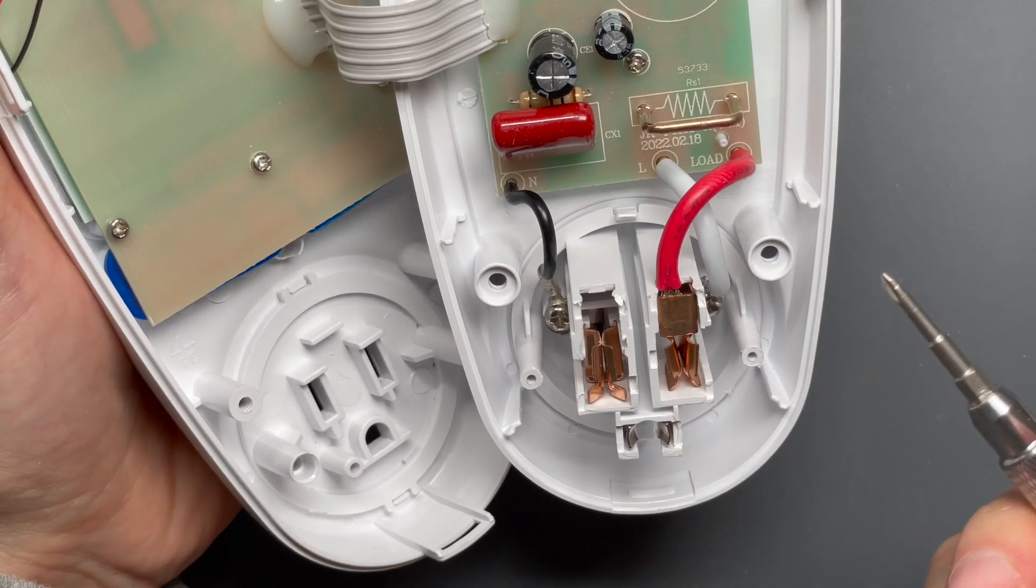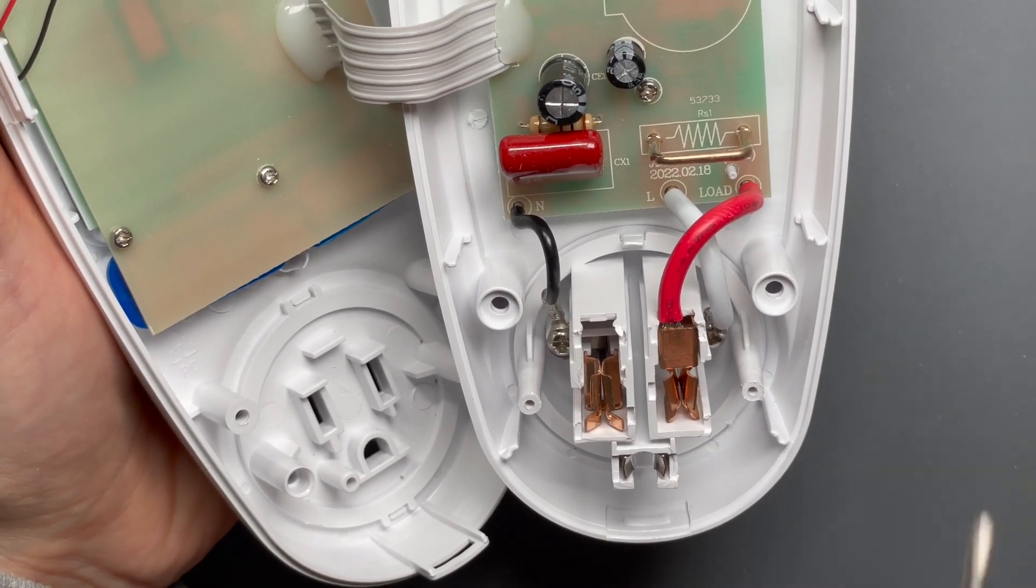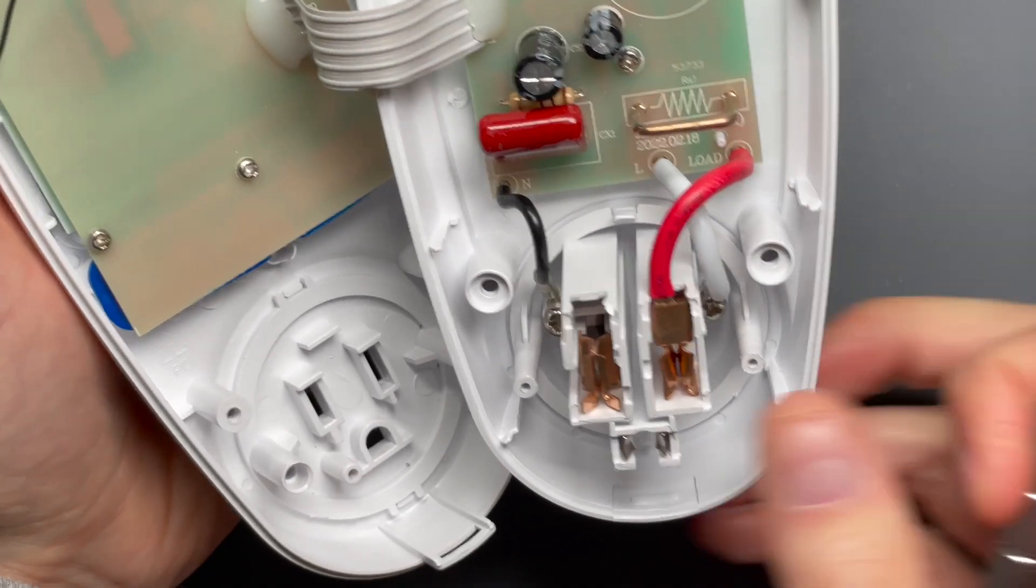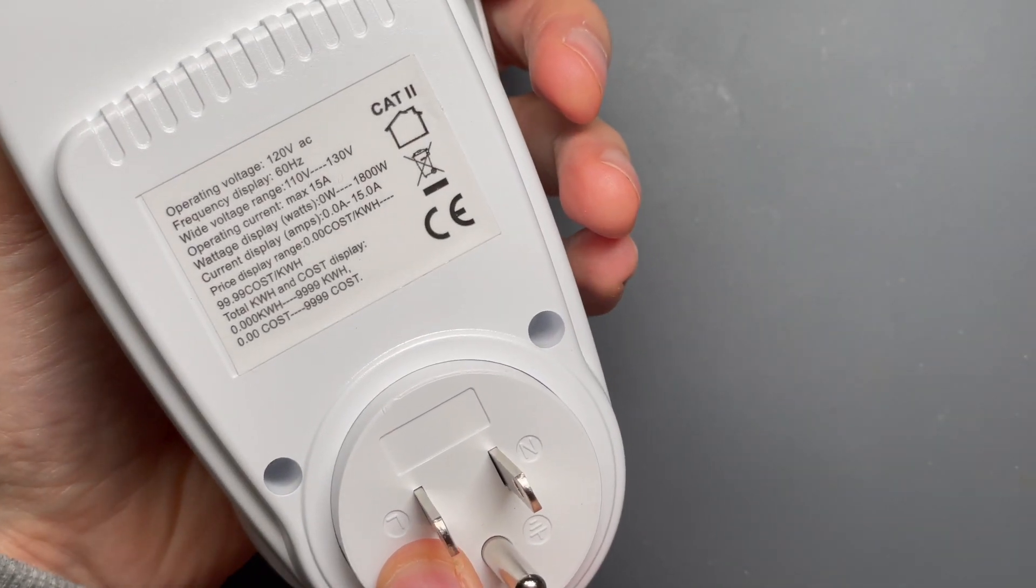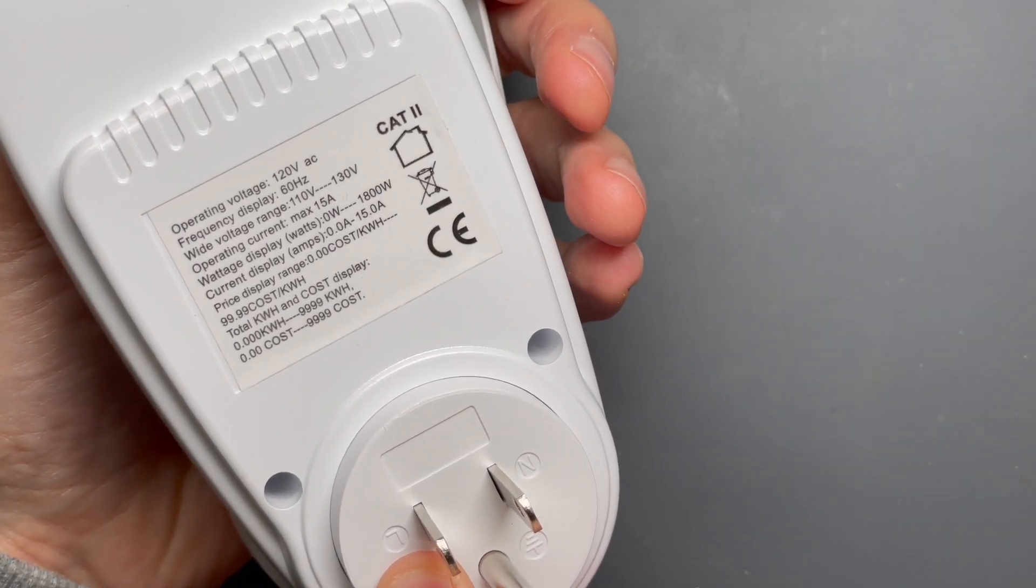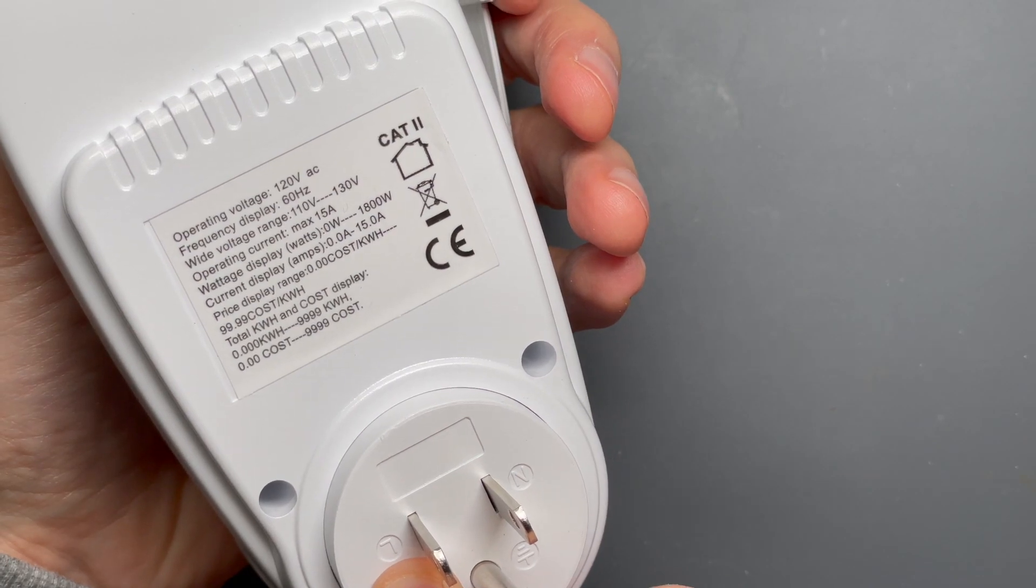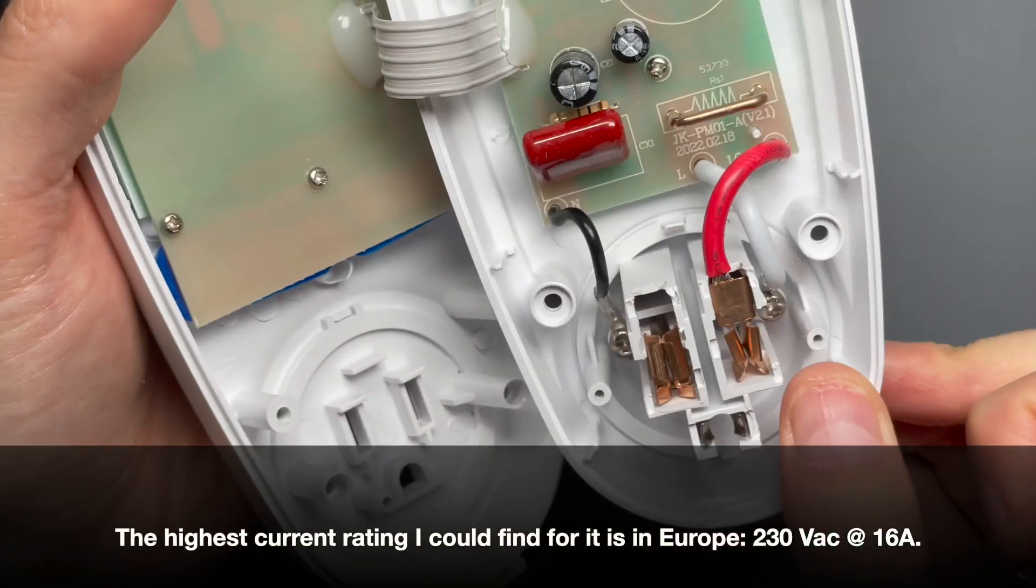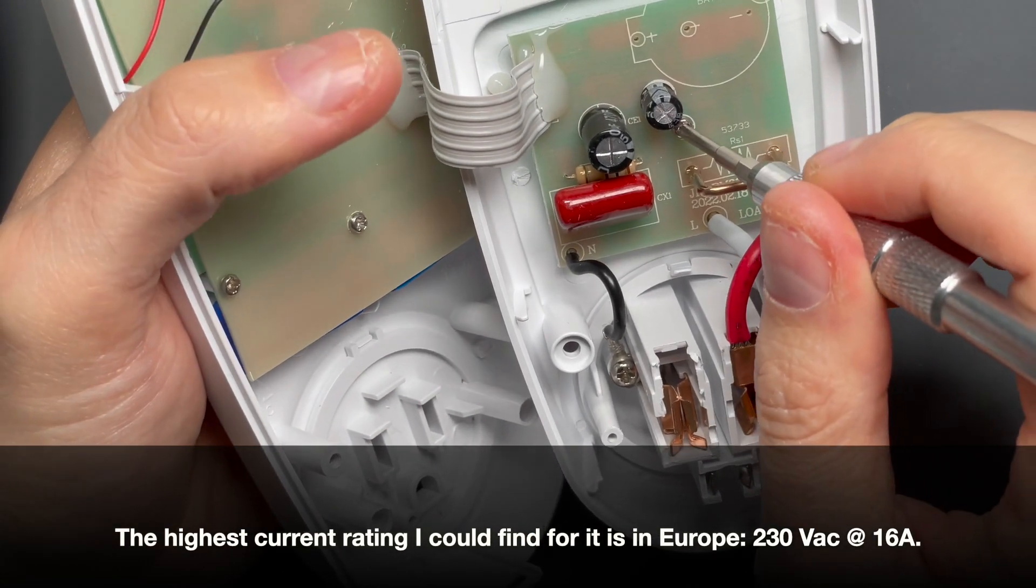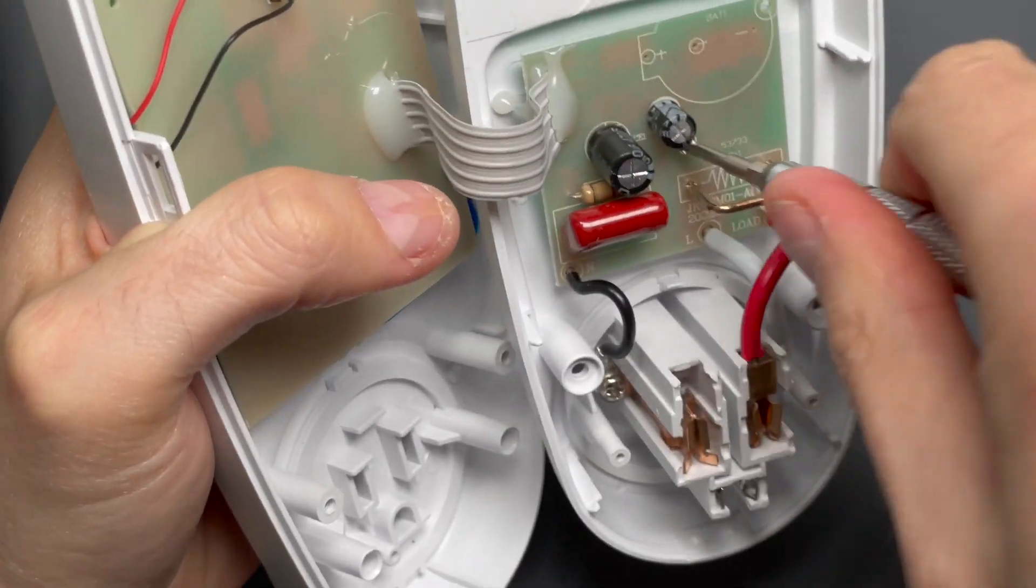Basically, if you put it in a 20 amp branch or something even higher, and it's not rated for that, which it's rating is 1800 Watts. Well, it says wattage display is 1800 Watts operating current max 15 amps. So you could overload it and then it's not going to shut itself off.